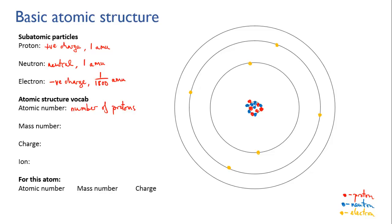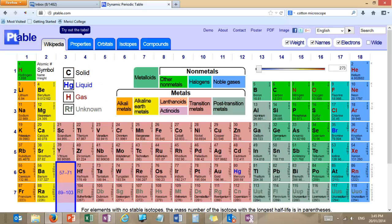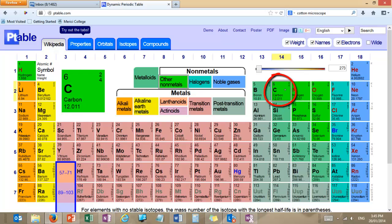Starting with hydrogen, with one proton in its nucleus, and going up to the much larger atoms. So the atomic number of our atom here is six — it has six protons. And if we were to look at a periodic table, you would find that atomic number six corresponds with carbon. So what we've got is a carbon atom.